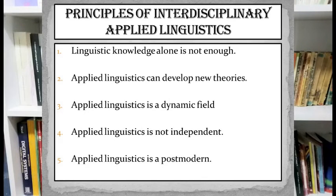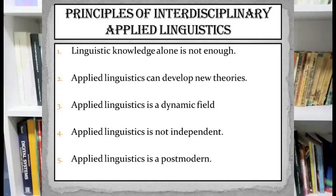Close examination of these definitions demonstrates that interdisciplinary applied linguistics is built on the following principles. First, it considers that linguistic knowledge alone is not enough to solve real-life problems involving language. It claims that applied linguistics should draw on solutions from other disciplines outside linguistics. Second, interdisciplinary applied linguistics can develop new theories if the existing ones are not useful in dealing with the problem it tries to solve.